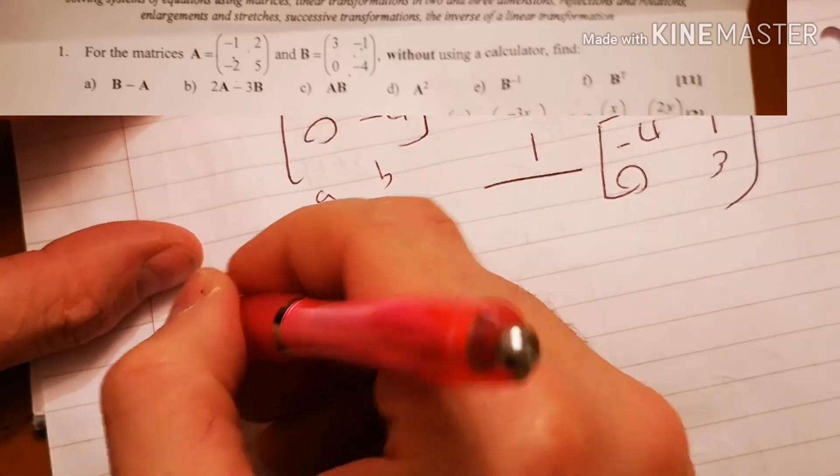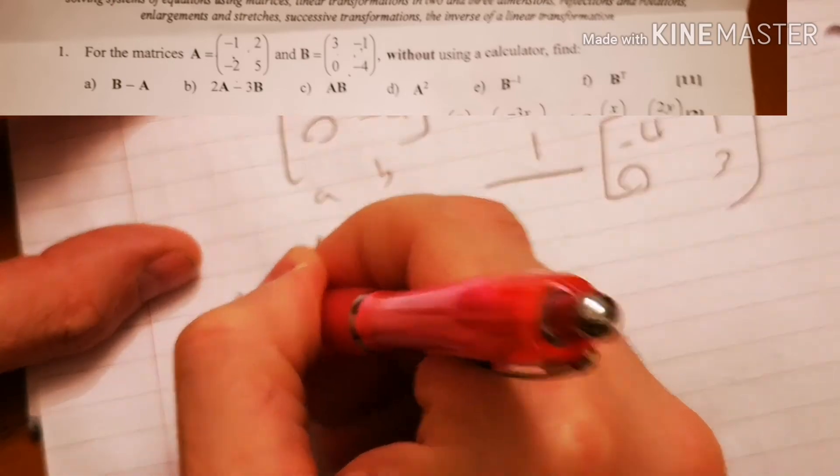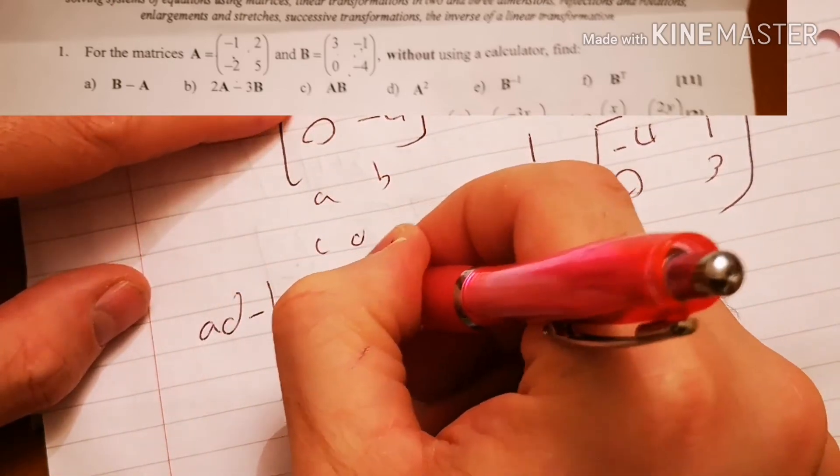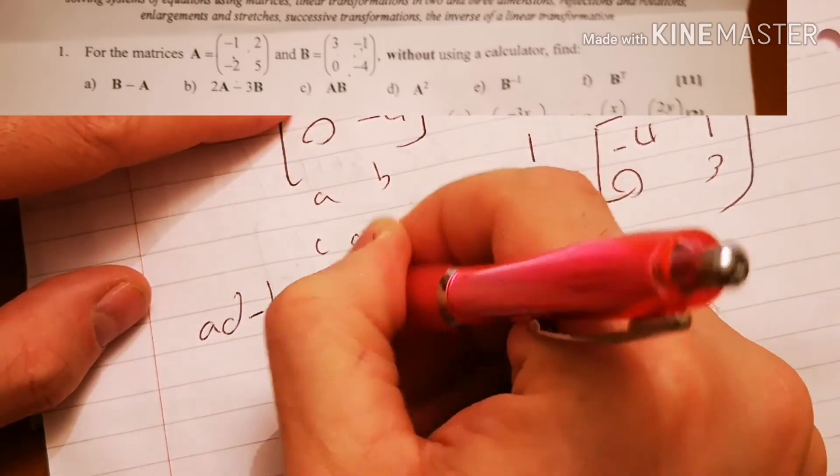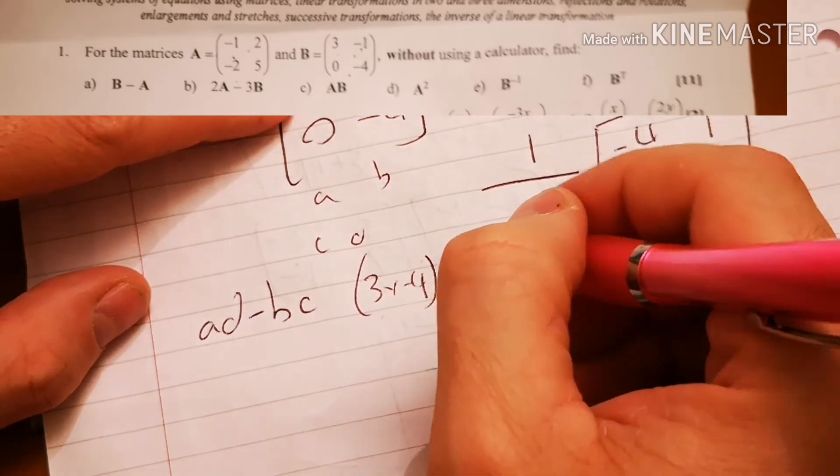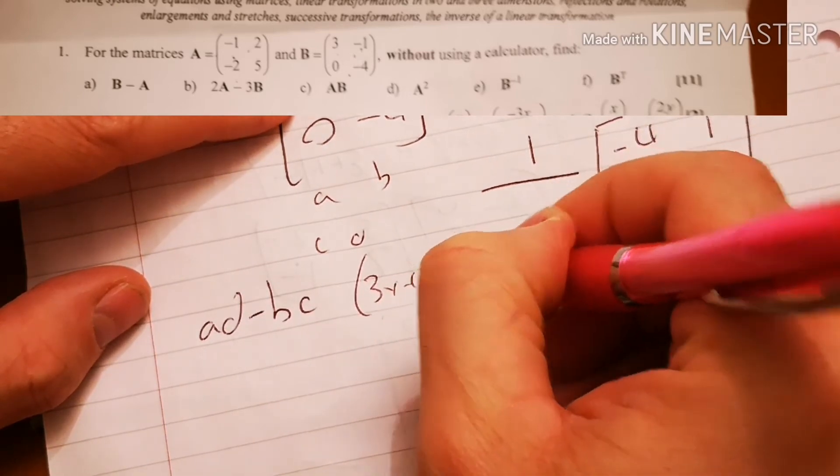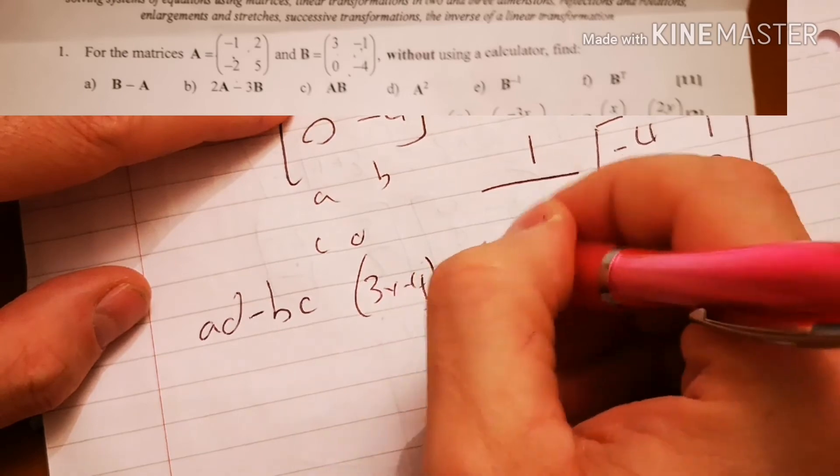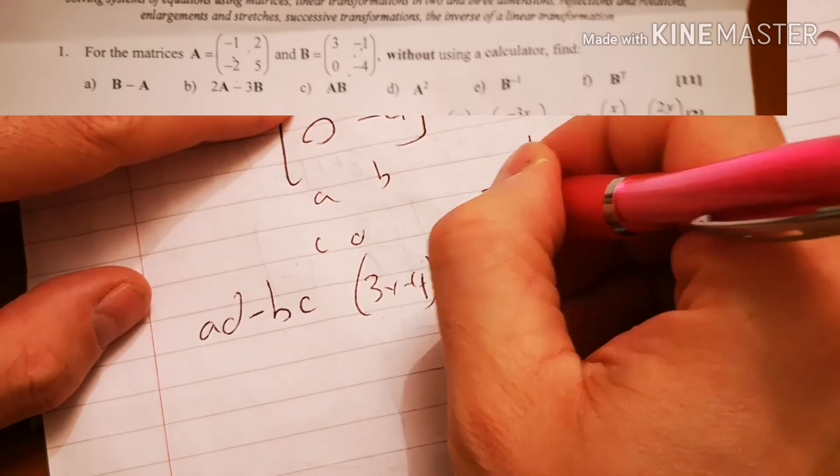And my determinant is a times d, minus b times c. Which is 3 times minus 4. Minus, minus 1 times 0. All this makes 0. So 3 times minus 4 is minus 12.